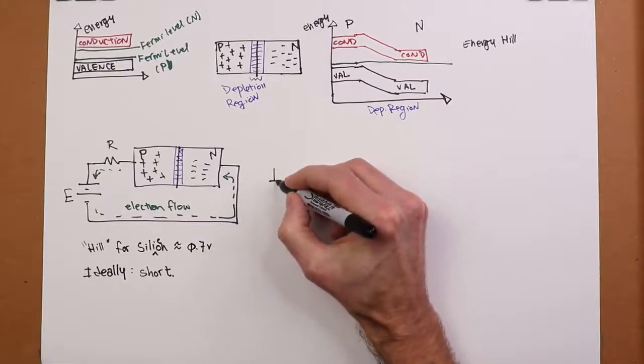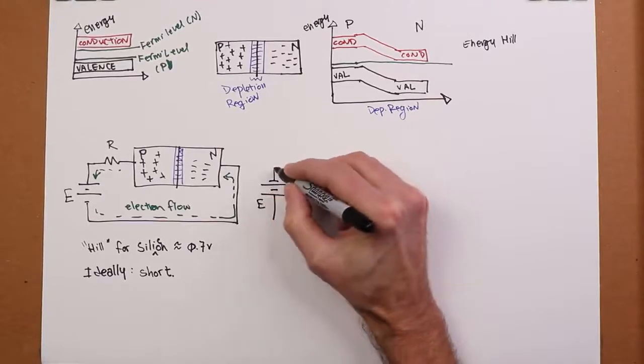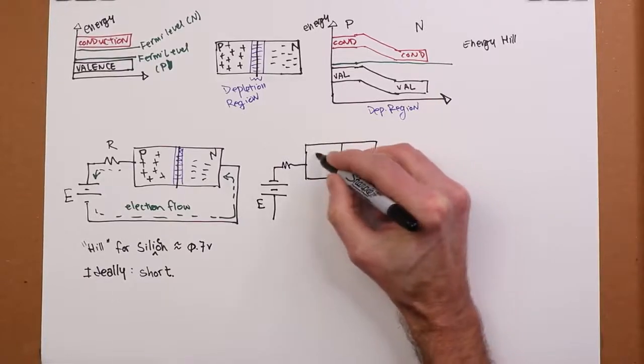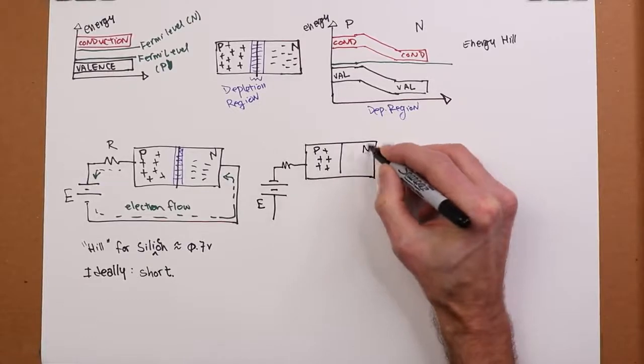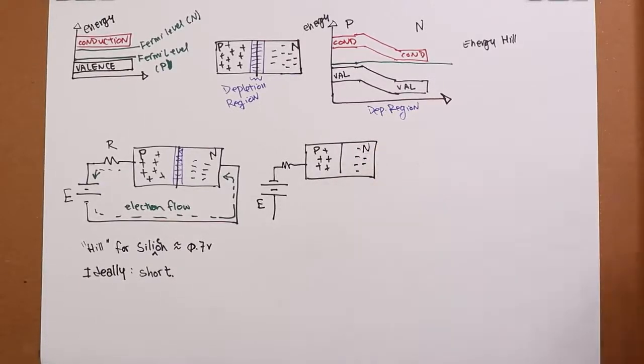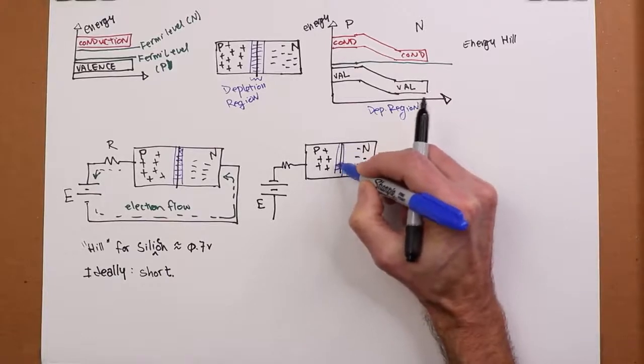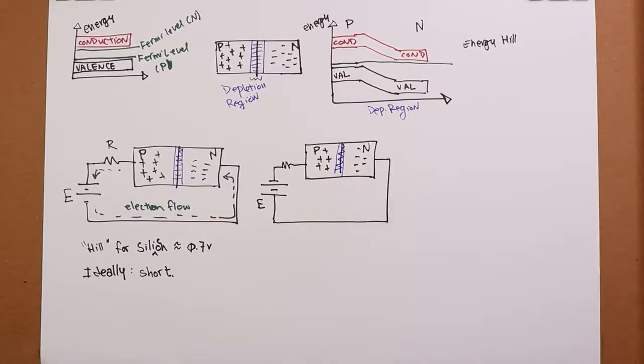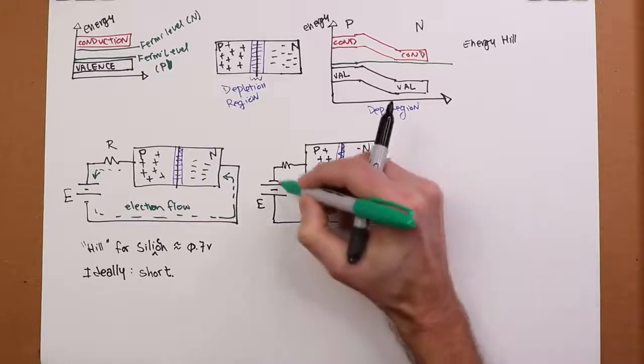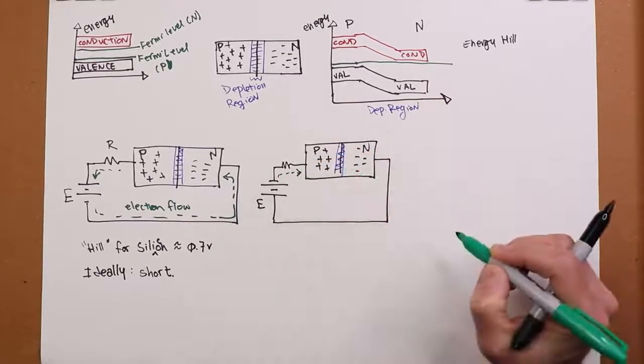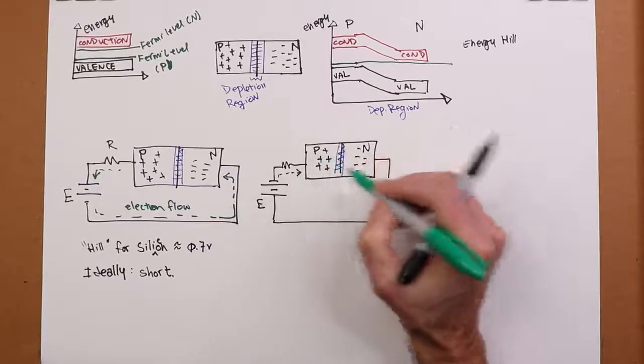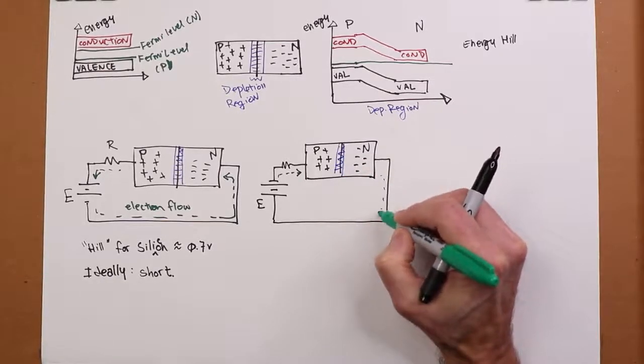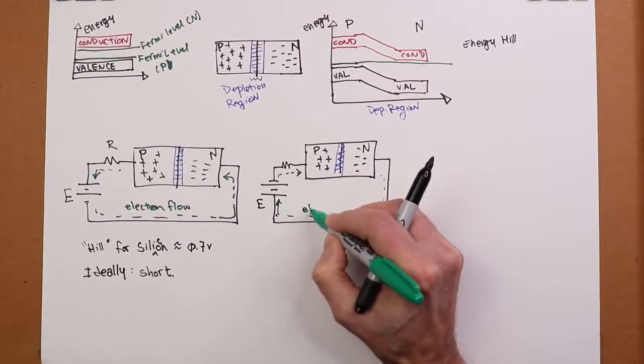So I'm just going to flip the battery over here, flip the power supply. Now, once again, we have our depletion region. Now we look at our electron flow. So that wants to go like this. So the electrons immediately fall into the holes in the P material. And of course, the electrons back here are initially drawn back to the positive terminal of the power supply. Again, this is electron flow.